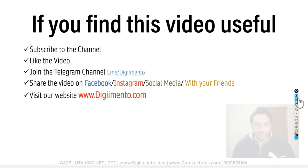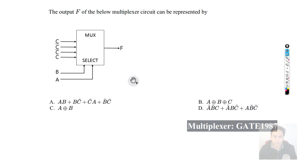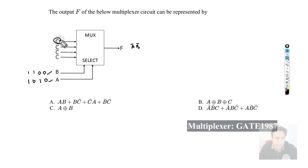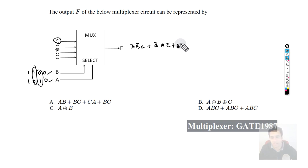So the very first question: the output f of the below multiplexer circuit — what will be the output of this circuit? We have input A and second input B. We pass values: for 00 (A complement B complement) the output is C; for 01 (B complement, A) the output is C complement; for 10 (B, A complement) the output is C complement; and for 11 (AB) the output is C. This equation is not matching with any of the given options.